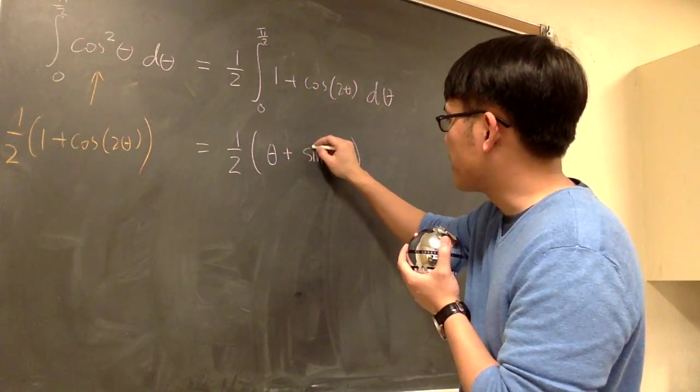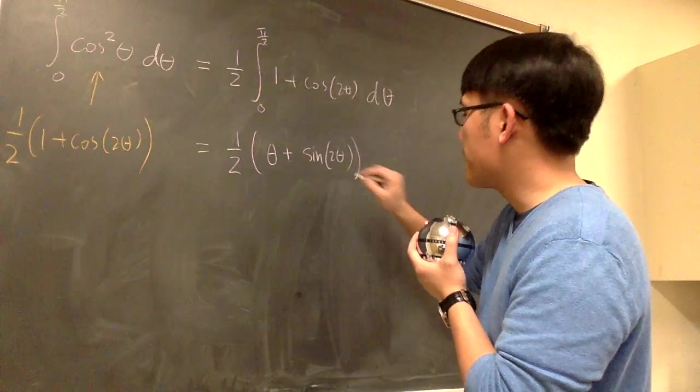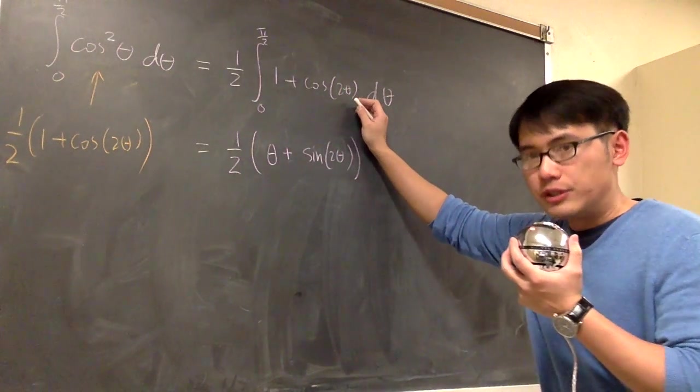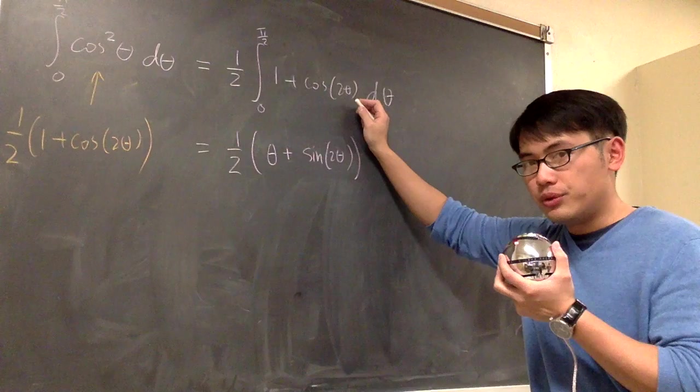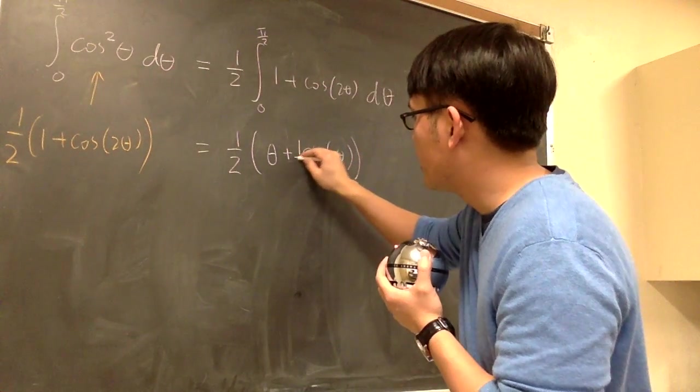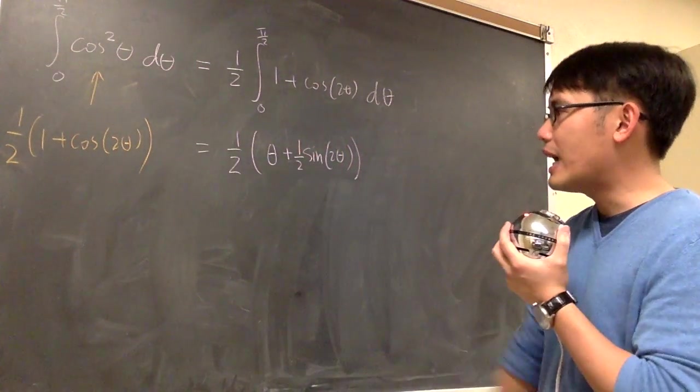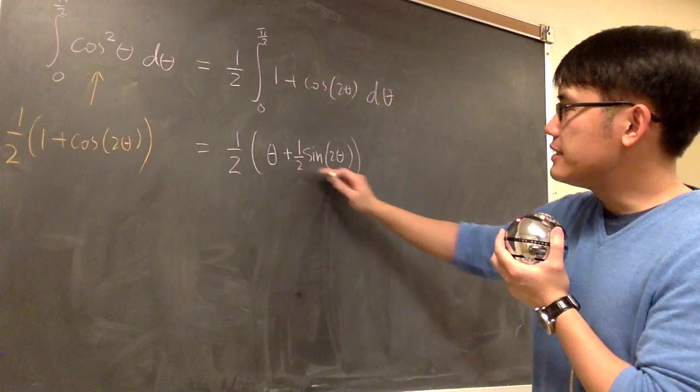And the inside will stay the same, which is sine 2 theta. But then because inside is 2 theta, the derivative of 2 theta is 2. I have to divide it by the 2. So let's put down 1 half right here. This is the anti-derivative of that.